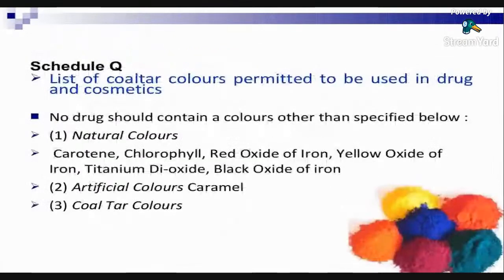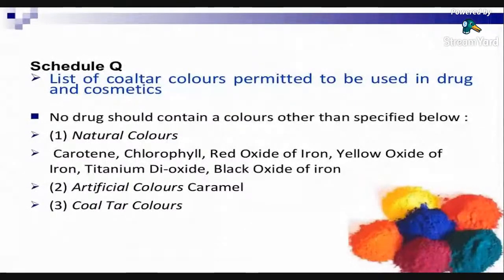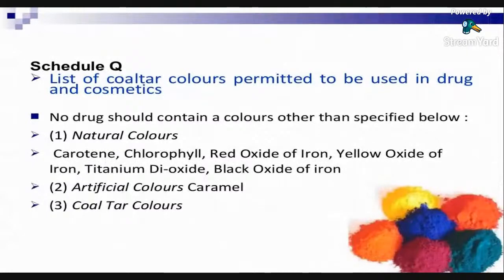Schedule Q contains the list of coal tar colors permitted to be used in drugs and cosmetics. No drug should contain a color other than those specified — it is strictly prohibited to use colors not on this list. This includes natural colors such as carotene, chlorophyll, red oxide of iron, yellow oxide of iron, titanium dioxide, and black oxide of iron, as well as artificial colors such as caramel and other permitted coal tar colors.